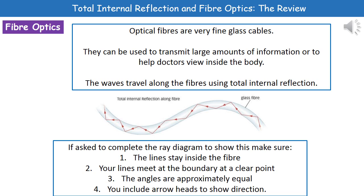Make sure your lines are meeting at the boundary at a very clear point — don't have them crossing halfway or not actually managing to meet each other, as you'll lose a mark for that. Your angles must be approximately equal; you don't have to use a protractor, but they should look roughly the same — don't have one very small angle and another very large one. Finally, make sure you include the arrowhead to show the direction, as you should with any ray diagram.